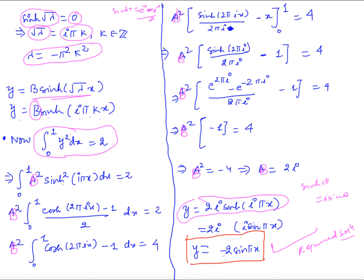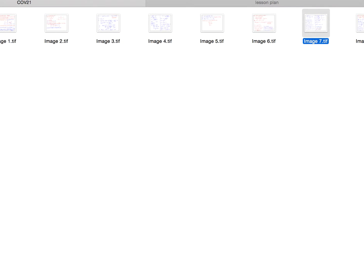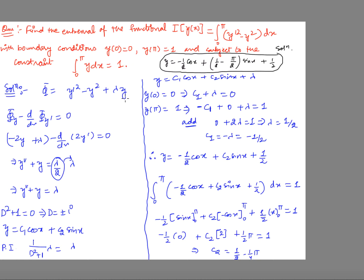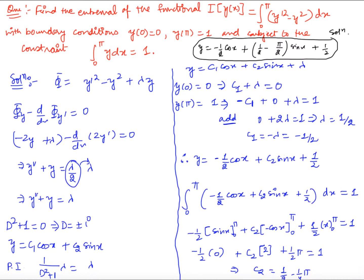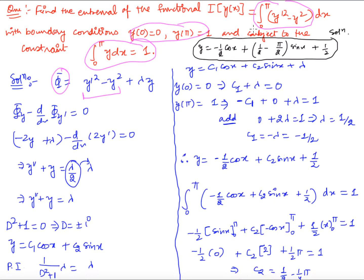Let us look at one more example. We have to find the extremal of another functional subject to boundary conditions and an extra constraint. Again, we write Φ = first functional + λ times the constraint functional, and apply the Euler equation. This gives −2y + λ − d/dx(2y') = 0, which yields y'' + y = λ/2 — calling this constant λ again.